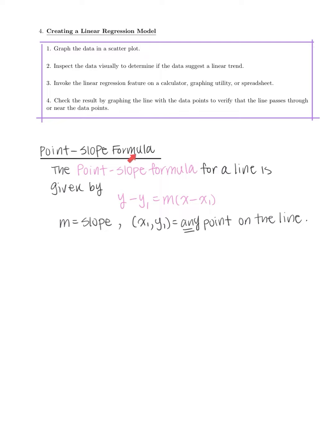Our first topic is the point-slope formula. The point-slope formula for a line is given by y minus y1 equals m times the quantity x minus x1, where m is the slope and x1, y1 is any point on the line. The x and y stay as just x and y — the only things you plug in are the slope m and the coordinates x1 and y1. This is just another formula to write an equation of a line.